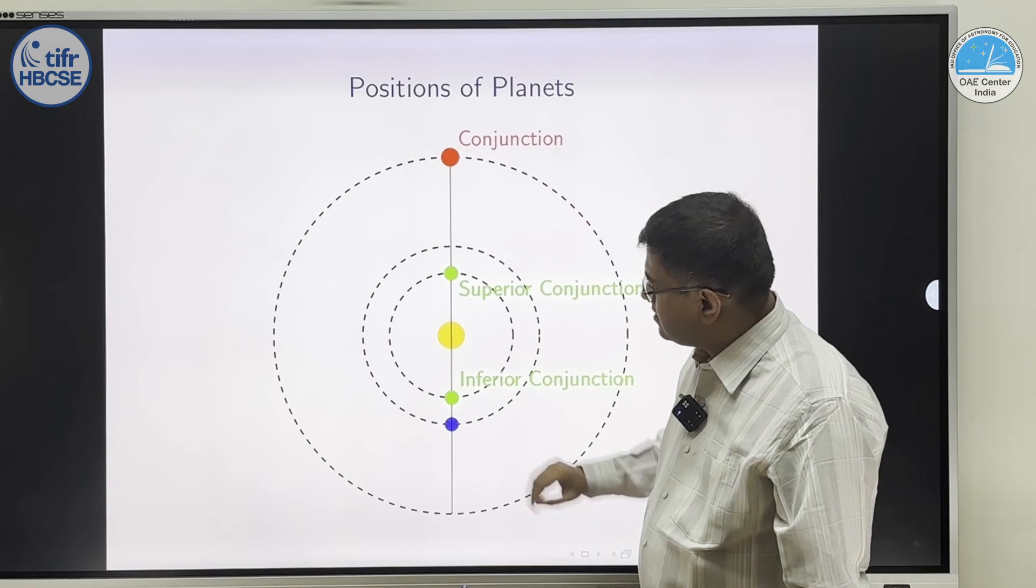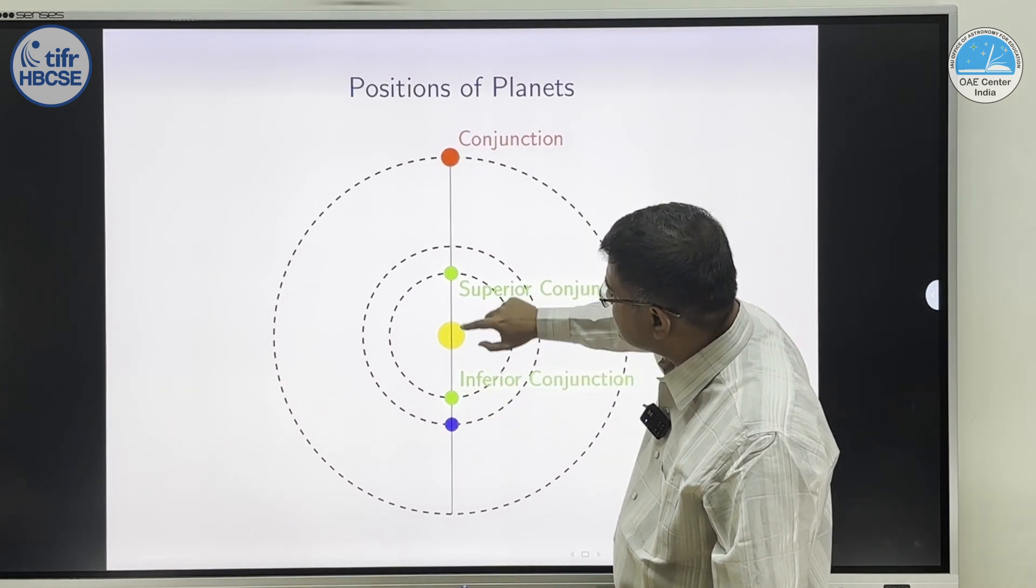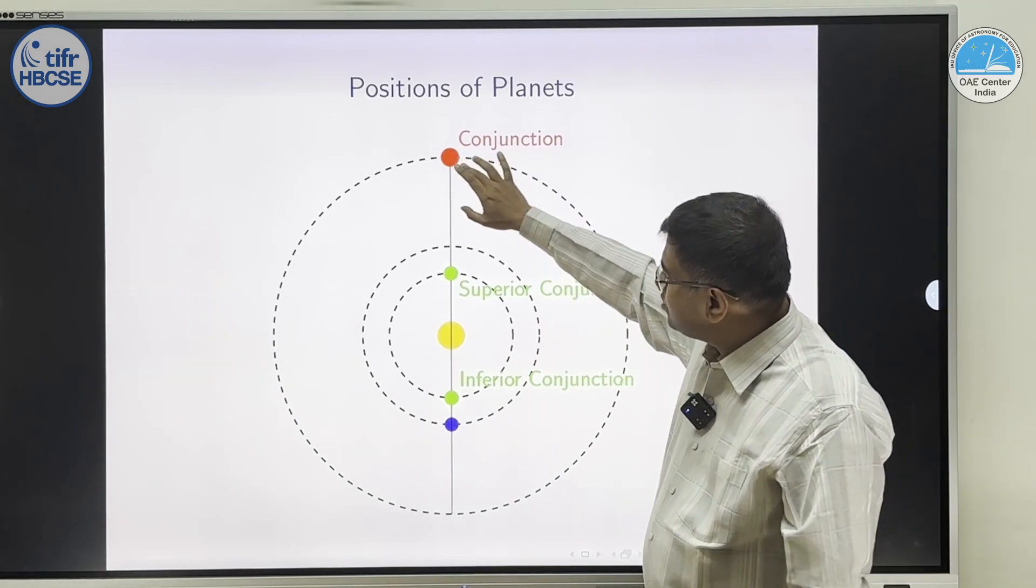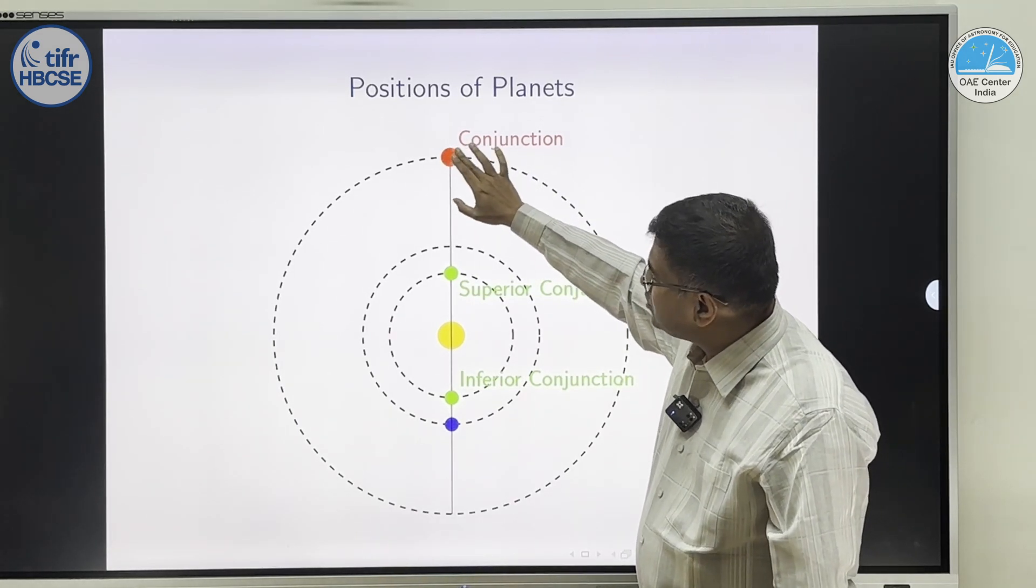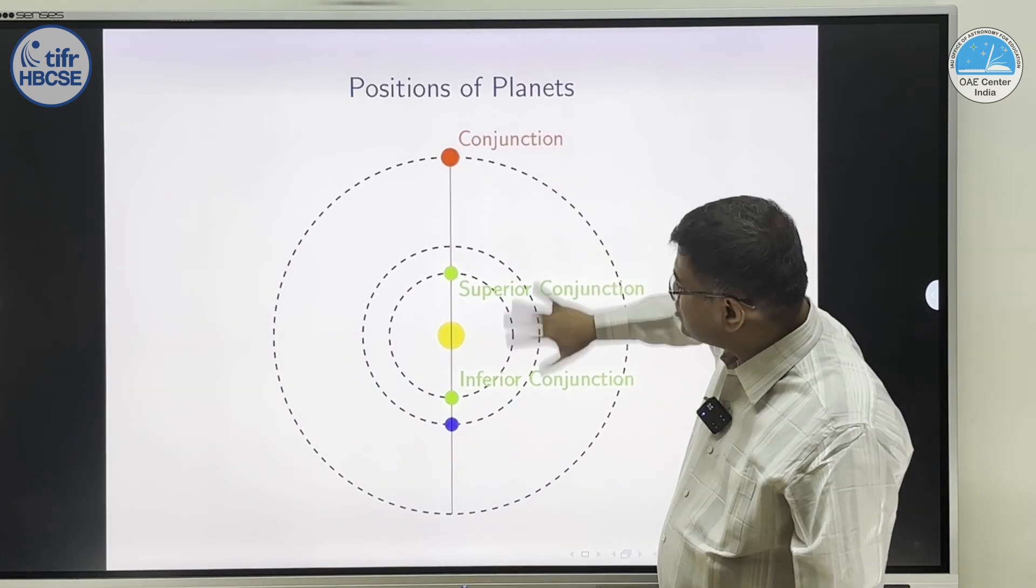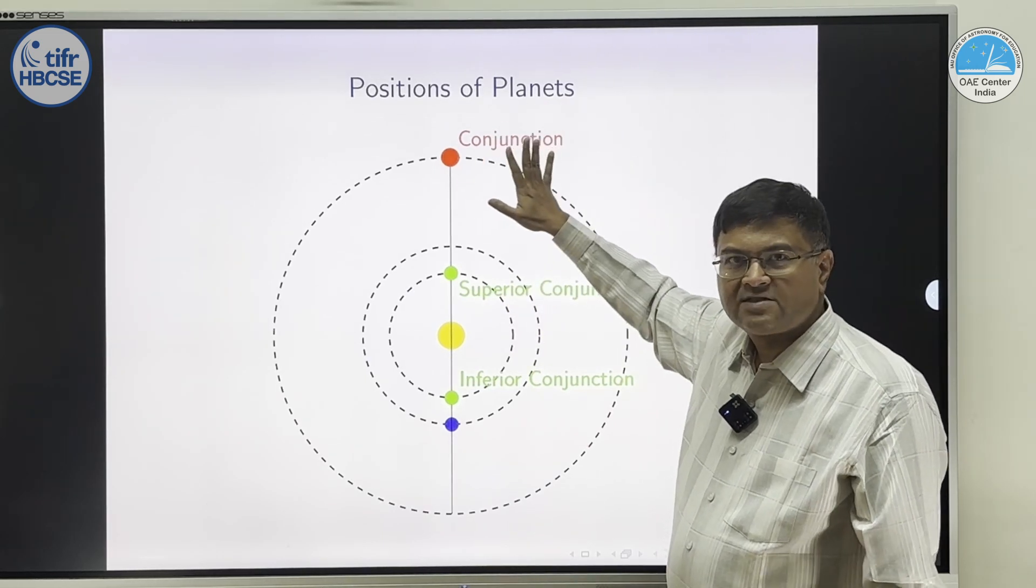Next, for the outer planets. Outer planet, again same vertical plane, the planet is seen together with the Sun. But now there is no second object. There is only one conjunction. We simply call it conjunction. So inferior spacing for the inner planets, conjunction is the only word for the outer planets.